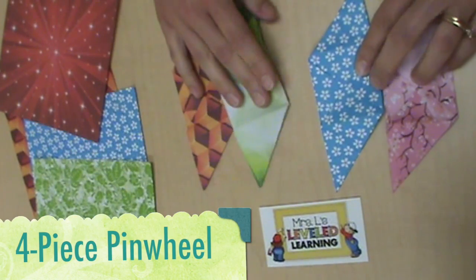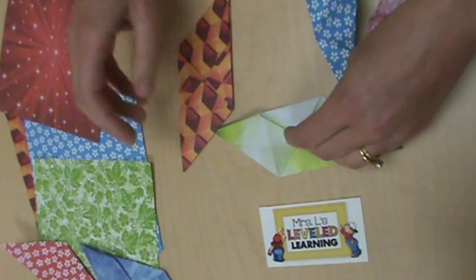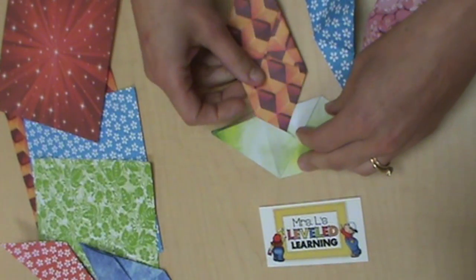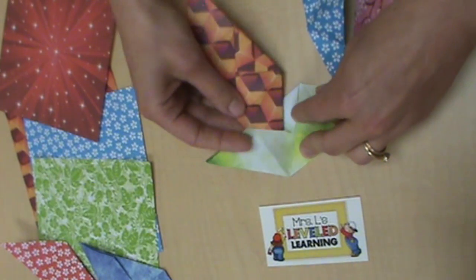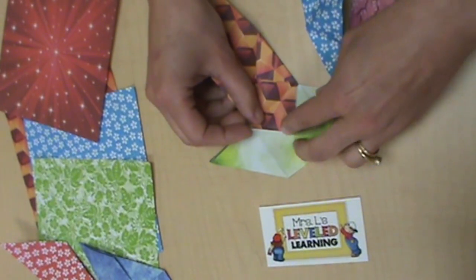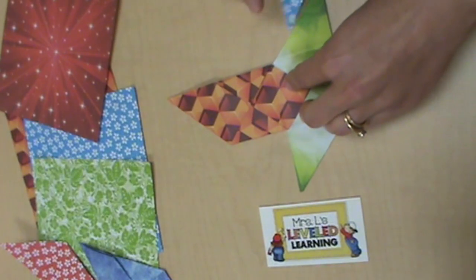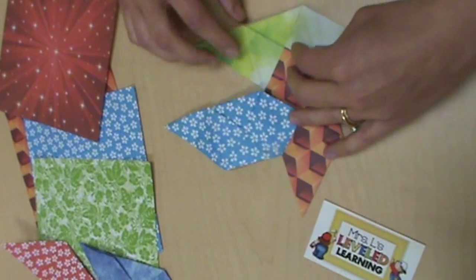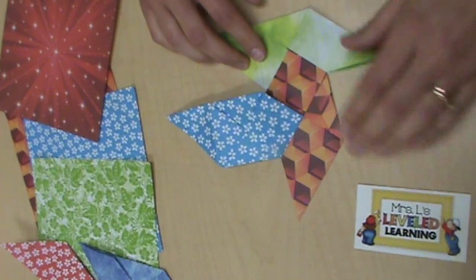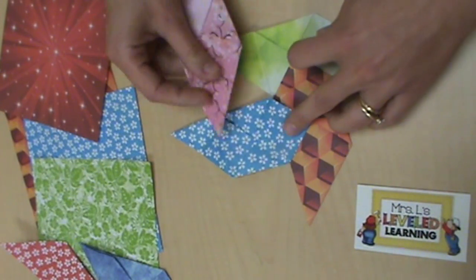Now using four pieces is going to be very simple. We're going to make what's called a pinwheel. So every corner will fit into a different piece in the same way we've been doing. The triangles fit into the triangular pockets. Except this time we're not going to make any extra folds.